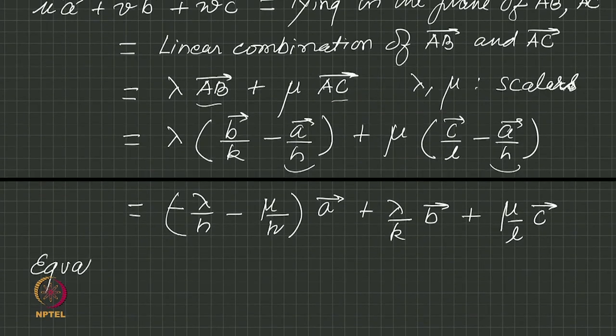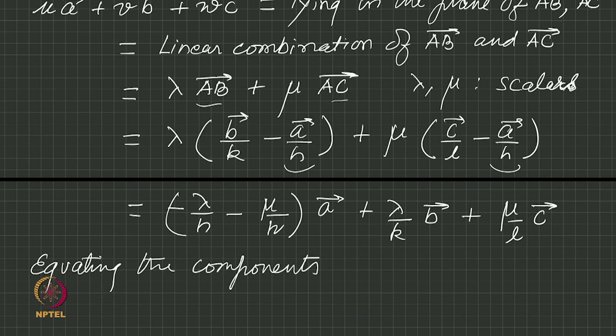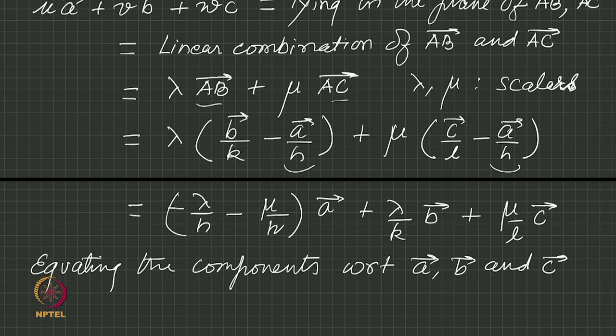Equating the components with respect to a, b, and c, just like you equate the component with respect to i, j, k. If two vectors are equal their components are equal. The crystal coordinate system is no different, except for the fact that a, b, c are not equal and their angles are not 90 degrees. But if two vectors are equal with respect to these vectors, the corresponding components have to be equal.